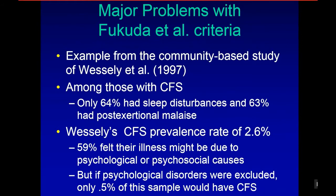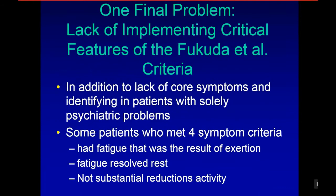The major problems with Fukuda criteria are exemplified by a Wessely study in 1997. Among those with CFS identified, only 64% had sleep disturbances and 63% had post-exertional malaise. In Wessely's CFS prevalence rate of 2.6%, 59% felt their illness might be due to psychological or psychosocial causes. But if psychological disorders were excluded, only 0.5% of the sample would have CFS.